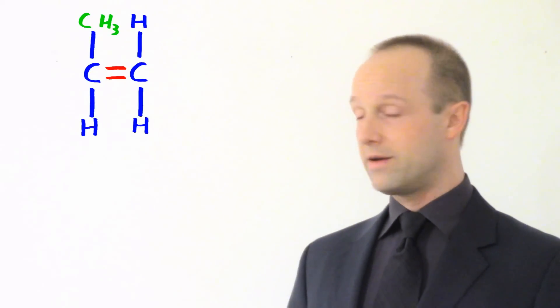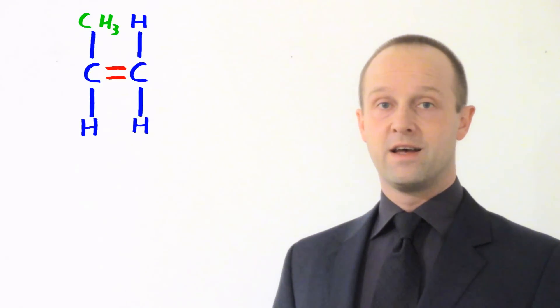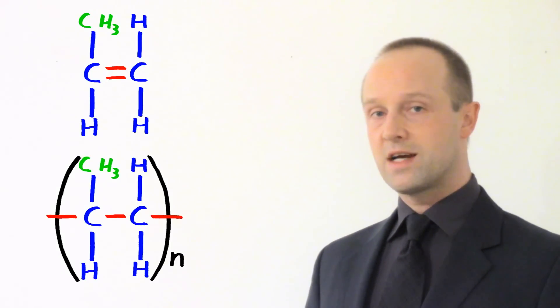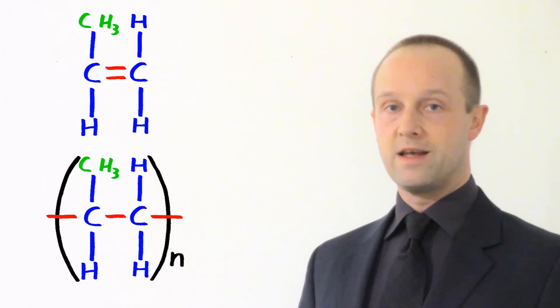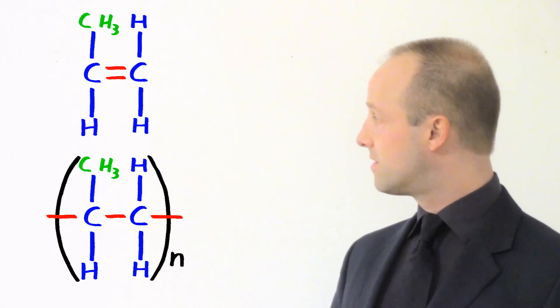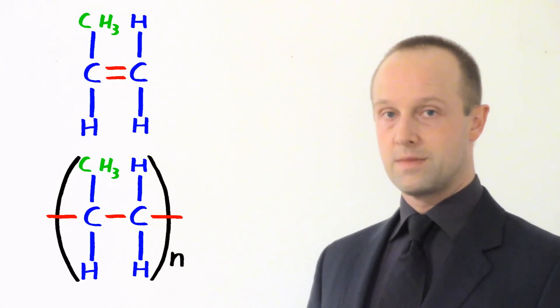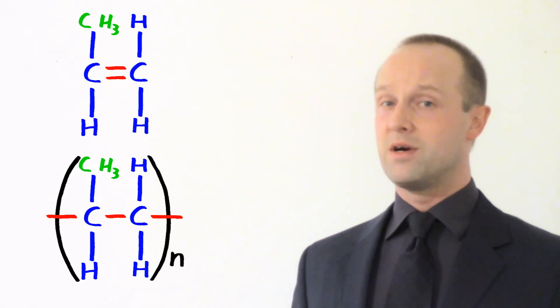So, let's have a quick look at three more monomers and the polymers which they form. Firstly, if we start with a propene monomer, like this one, and it polymerizes, then we form polypropene. You can see that this is almost identical to when we form polyethene from ethene. The only difference is in the place of one of those H's, there's a CH3 group now. So, it's pretty much identical except for that CH3 group.